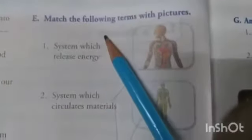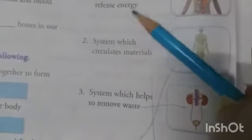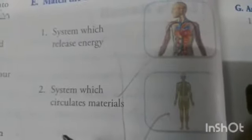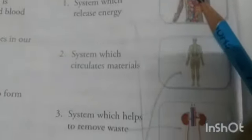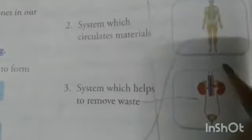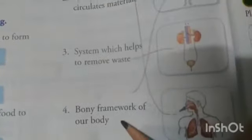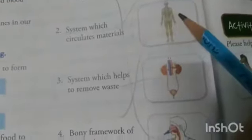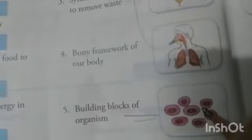Next is match the following terms. First: system which releases energy — that is respiration; match it with the fourth picture showing the respiratory system. Second: system which circulates materials — match it with the first picture, the circulatory system. Third: system which helps to remove waste — excretory system, match it with the third picture. Fourth: bony frame of our body — skeletal; match with the skeletal system. Fifth: building blocks of organism — cells.